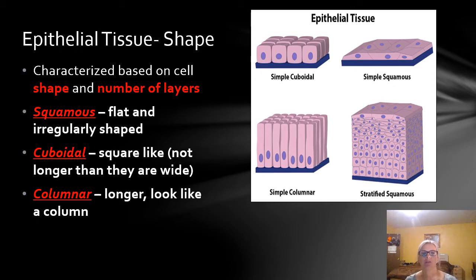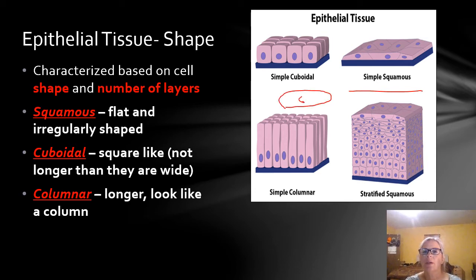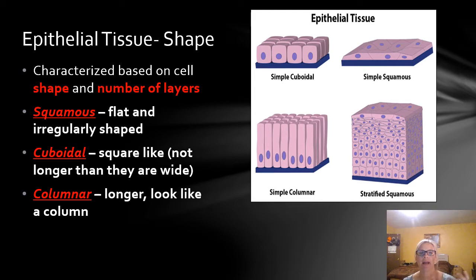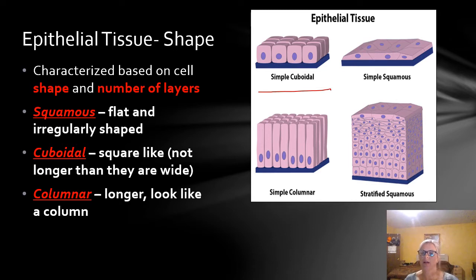A squamous cell is going to be flat and irregularly shaped. We have some squamous cells over here on the left, and they look a little bit like fried eggs. Sometimes they can be way, way flatter than what's shown in the picture. Next, cuboidal is going to be a squarish type shape to a cell — not true squares, but they do resemble a square.